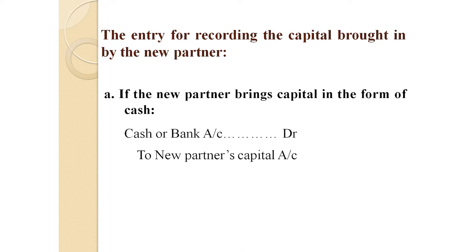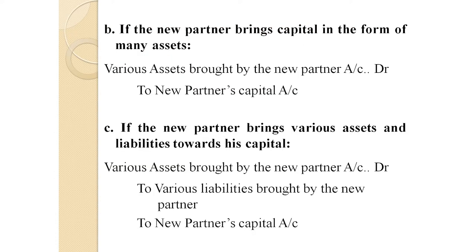Let us discuss the journal entries for recording capital brought in by the new partner. First, if the new partner brings capital in the form of cash, the entry is: Cash/Bank Account Dr. to New Partner's Capital Account. Second, if the new partner brings various assets, the entry is: Various Assets Account Dr. to New Partner's Capital Account. Third, if the partner brings various assets and liabilities, the entry is: Various Assets Account Dr. to Various Liabilities Account and to New Partner's Capital Account.